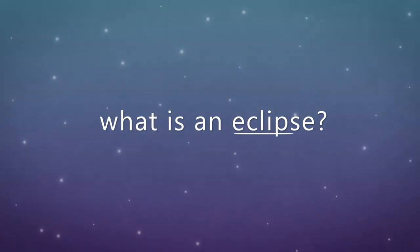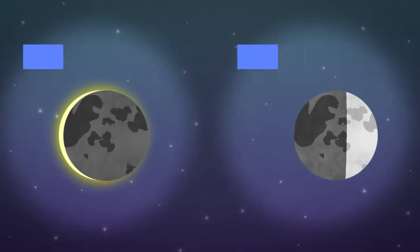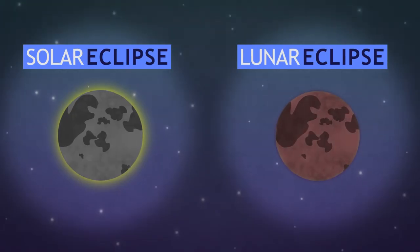An eclipse is a brief but amazing event in the sky, when the sun or moon gets blocked or darkened.